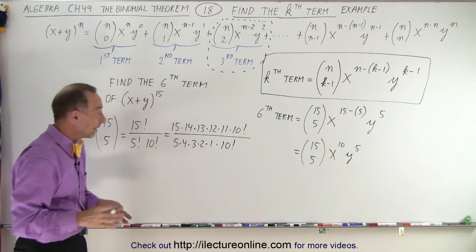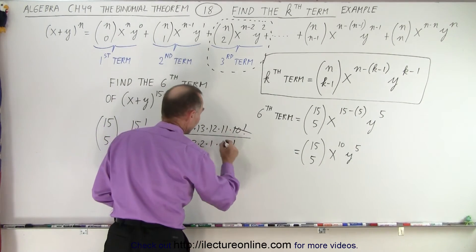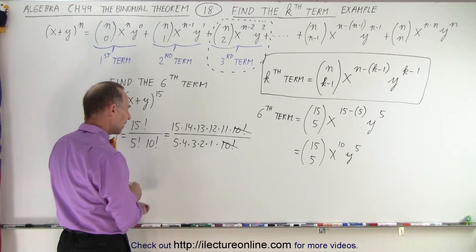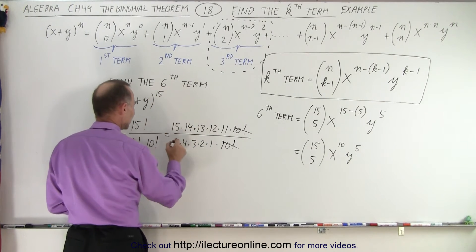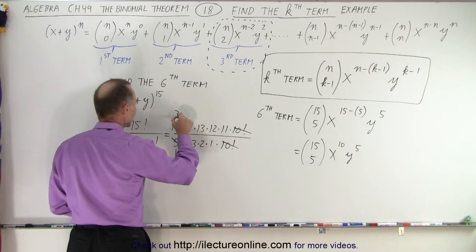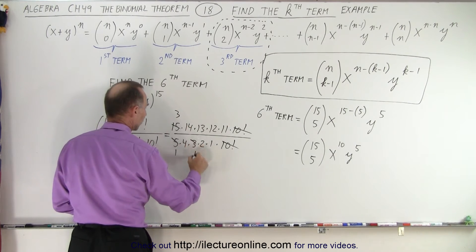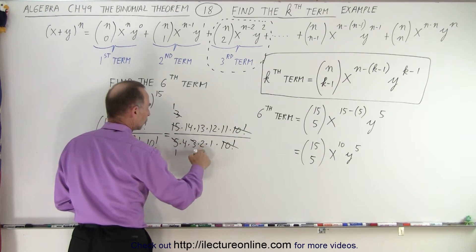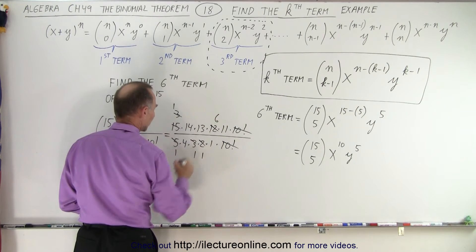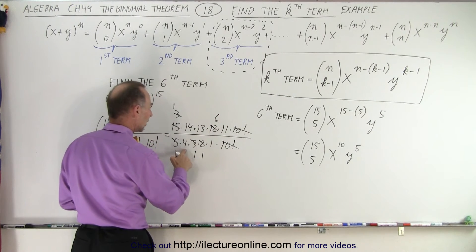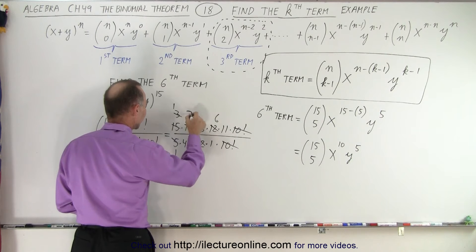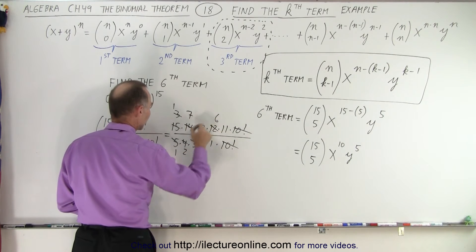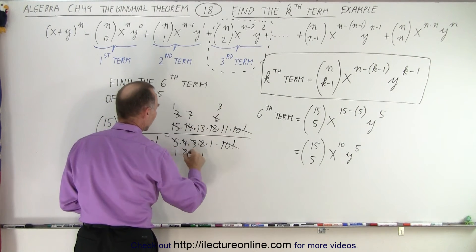And right away you can see that the 10 factorial cancels out. Now we need to simplify things a little bit more. We have 15 and 5 that becomes 3 and 1. We have 3 and 3 that becomes 1 and 1. A 2 and 12 becomes 1 and 6. And 4 and 14 becomes 7 and 2. And 6 and 2 becomes 3 and 1. So we have 1s all the way down the denominator.